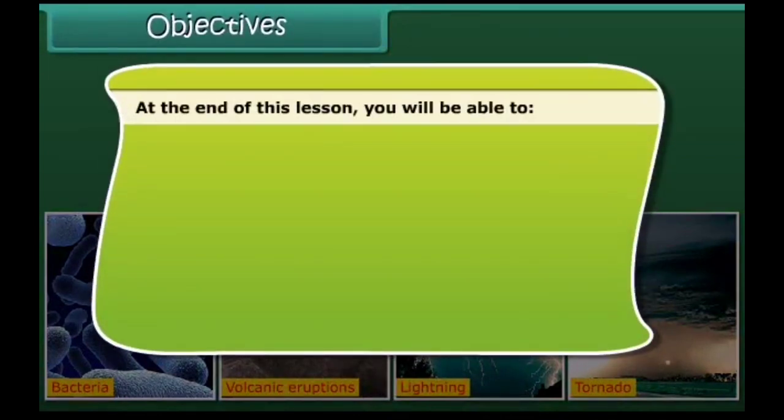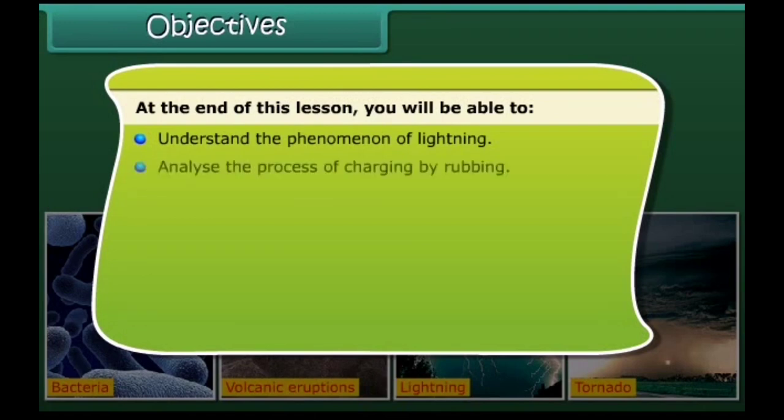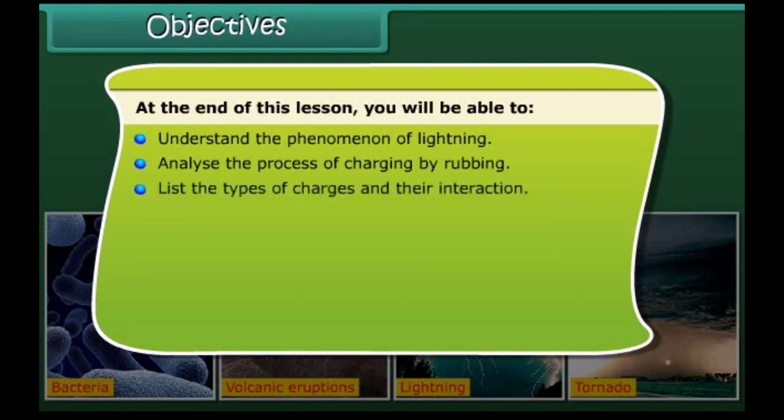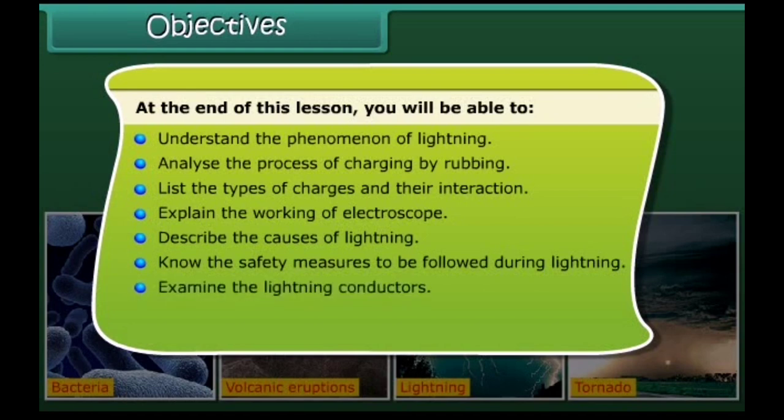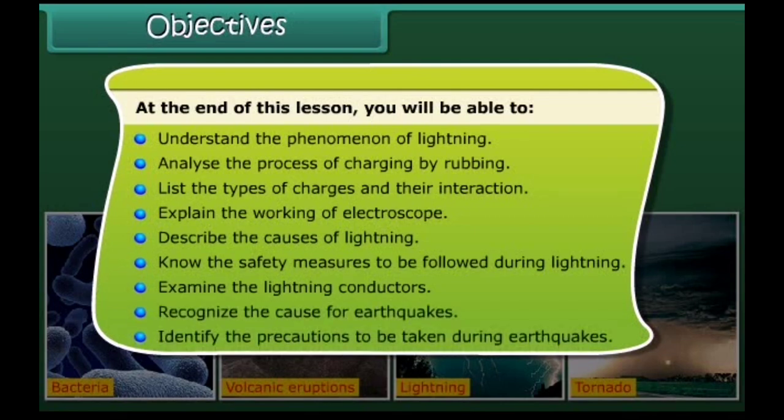Objectives. At the end of this lesson, you'll be able to understand the phenomenon of lightning, analyze the process of charging by rubbing, list the types of charges and their interaction, explain the working of electroscope, describe the causes of lightning, know the safety measures to be followed during lightning, examine the lightning conductors, recognize the cause for earthquakes, and identify the precautions to be taken during earthquakes.